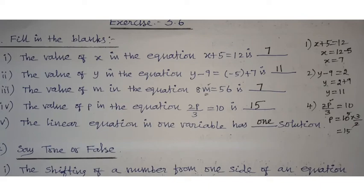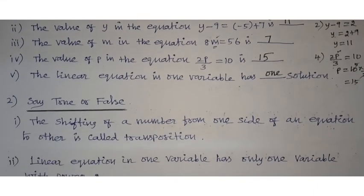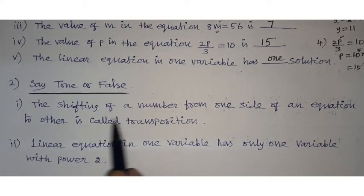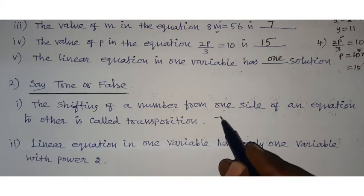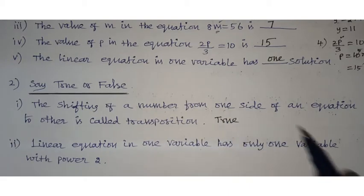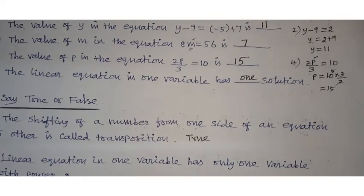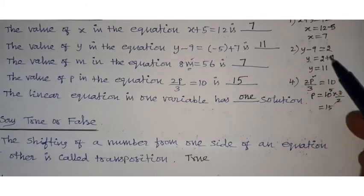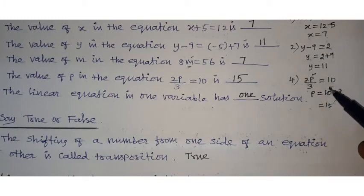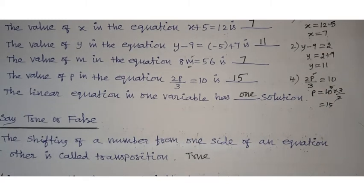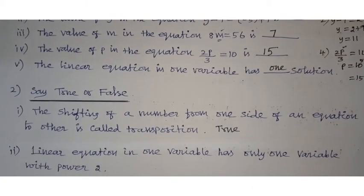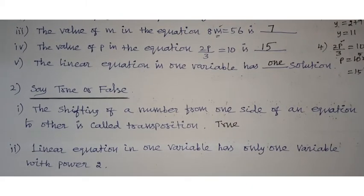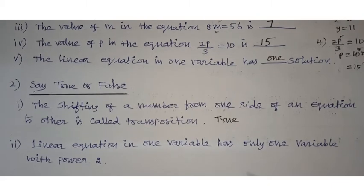Now, true or false. First statement: the shifting of a number from one side of an equation to the other side is called transposition. This is a true statement. We bring terms to the other side with opposite signs — minus becomes plus, plus becomes minus, multiply becomes divide — that method is known as transposition.